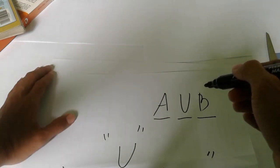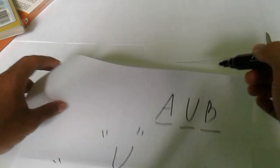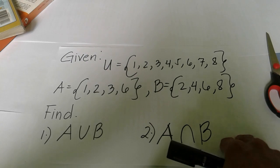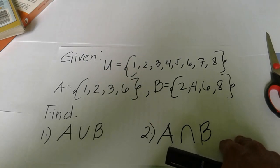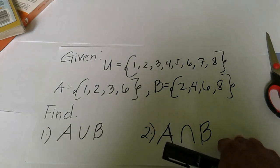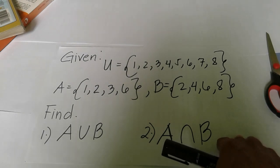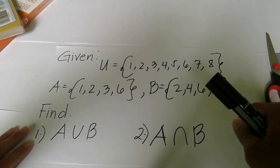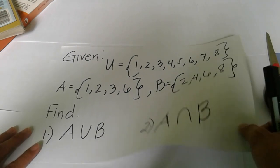To more easily understand, let's have an example. Given: the universal set U has elements 1, 2, 3, 4, 5, 6, 7, and 8. Set A is {1, 2, 3, 6} and set B is {2, 4, 6, 8}. Find A union B and A intersection B.